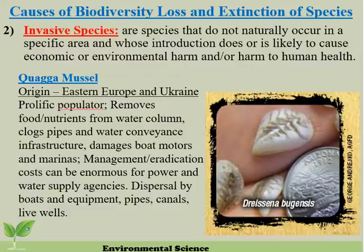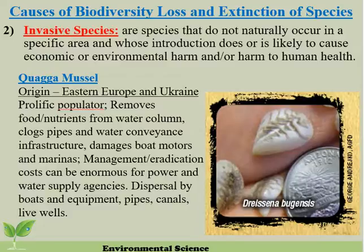Number two: invasive species. This isn't really tied so much to human population growth, but it is tied to our activities — primarily travel and shipping. An invasive species, sometimes termed exotic or non-native, are species that do not normally occur in a specific area and whose introduction does or is likely to cause economic or environmental harm or harm to human health. Exotic and non-native species are not always a bad thing; it's when they become a problem for the environment or economy that they're classified as invasive.